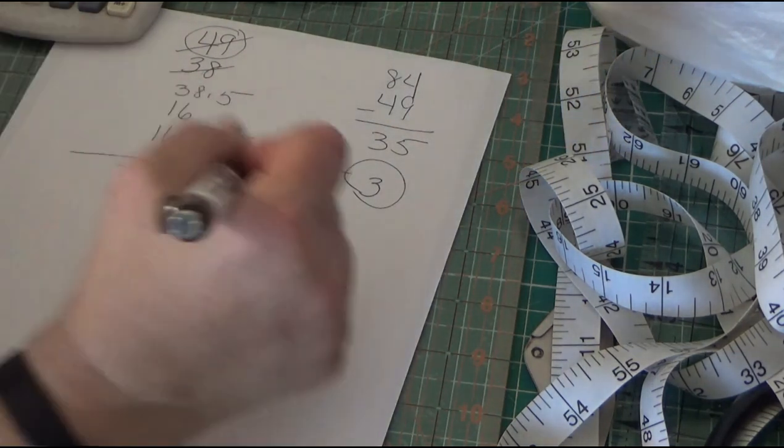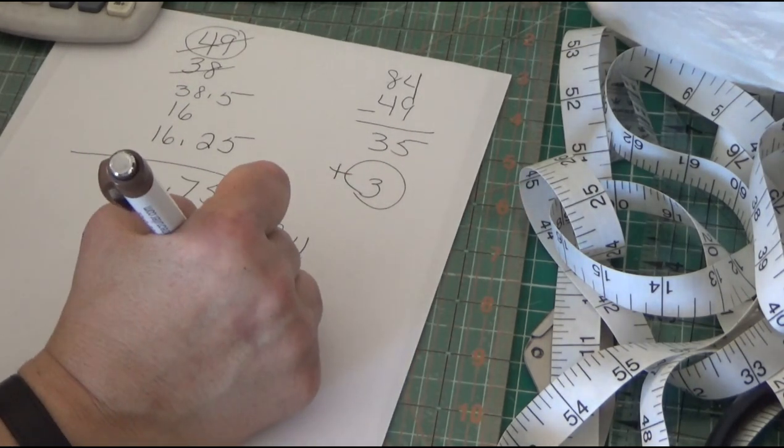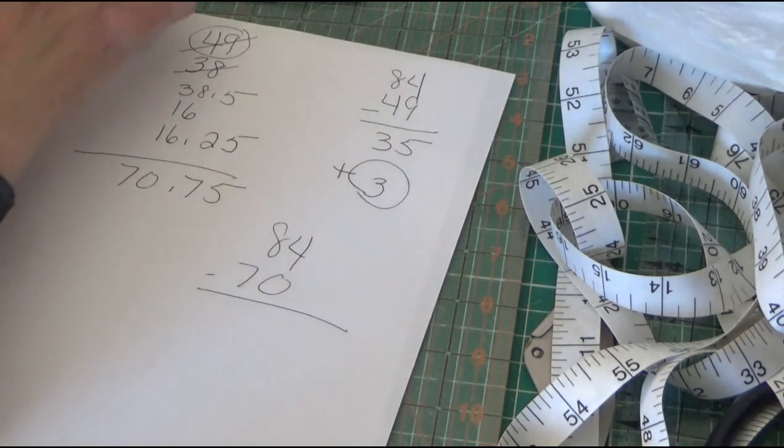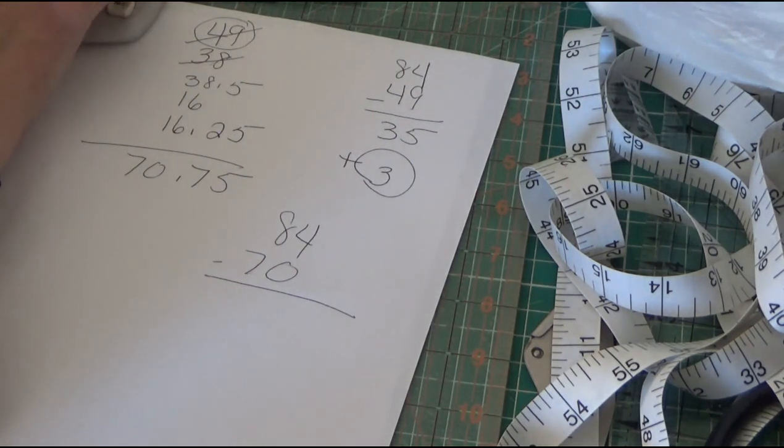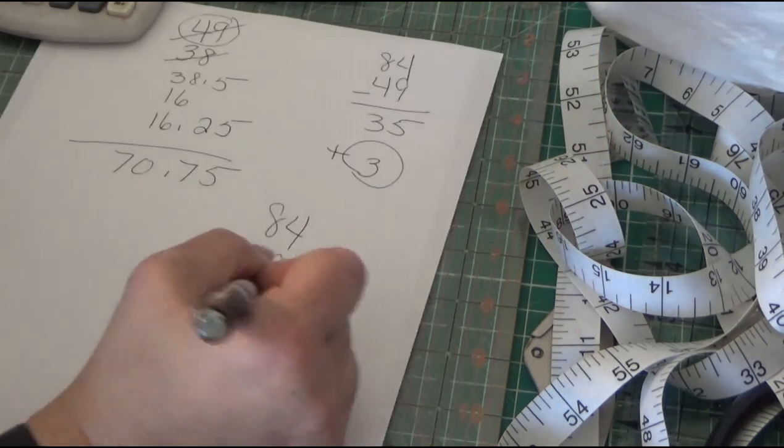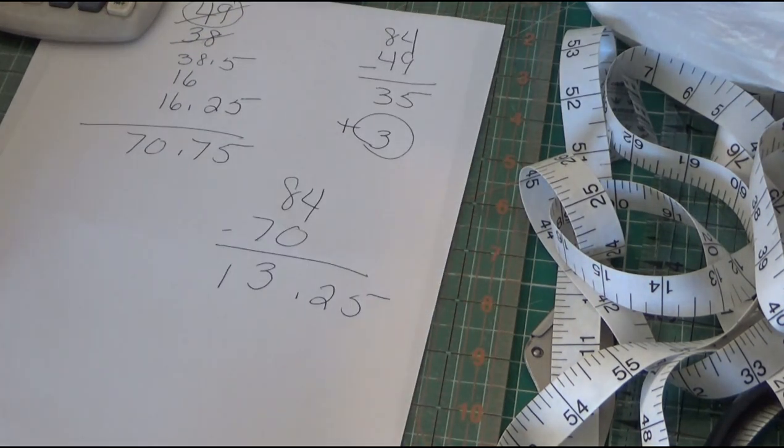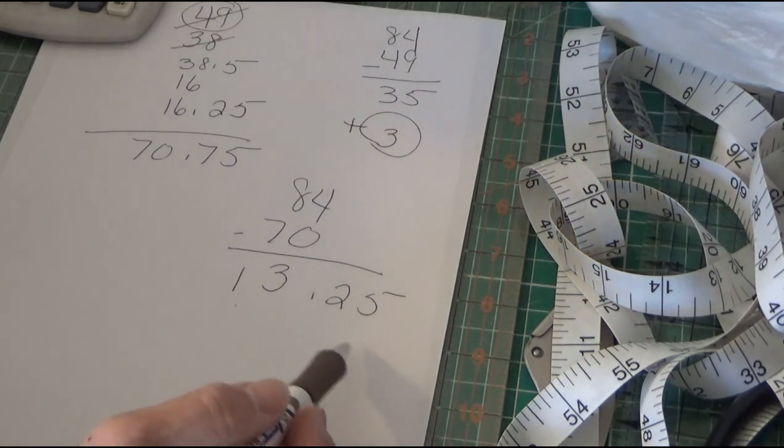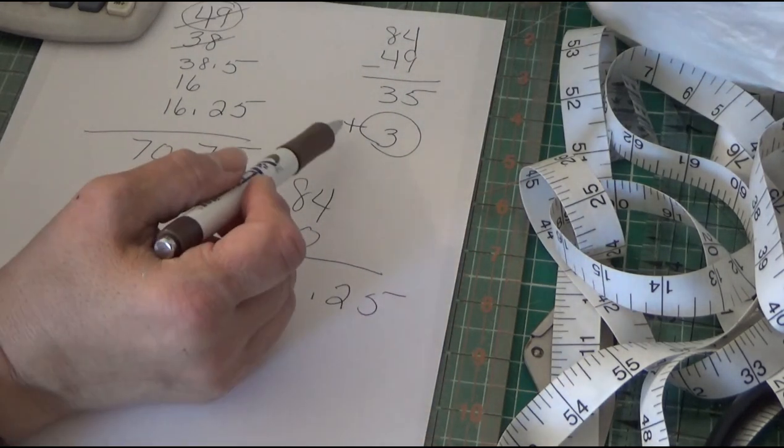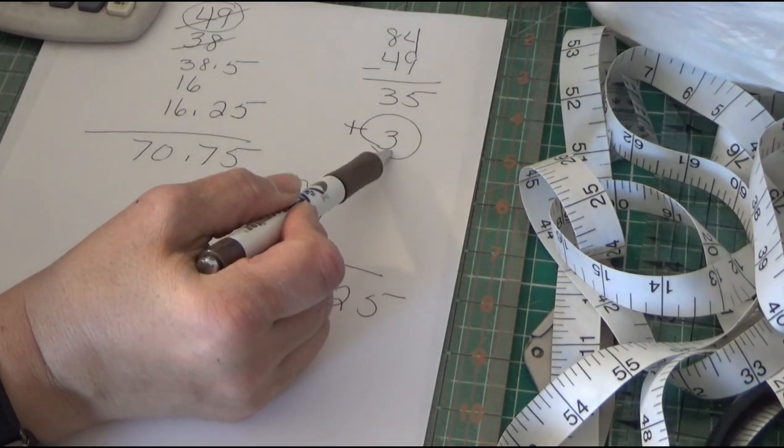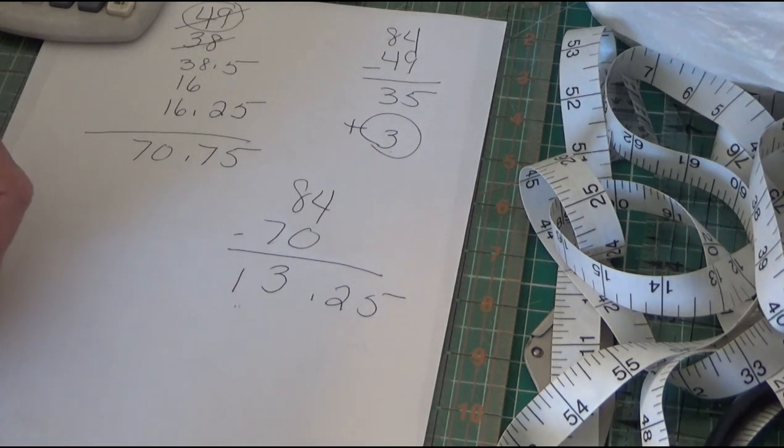Well, my strip has to be 84 minus 70.75, and that's going to give me 13.25. So I could do one of two things. I can make another strip from the scraps or leftover fur that was cut to measure out 13.25, or I can just cut one that's 10 inches and add my additional three. But I don't really think I want to do that because the less seams for me, the better, right?